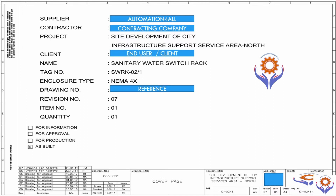Under that section, you can find the drawing approval, contract number, drawing title, project title, project reference, the size of the drawing sheets, revision numbers, sheet numbers, and the total number of sheets. You'll also find the client logo and drawing numbers. This is the overall cover page.